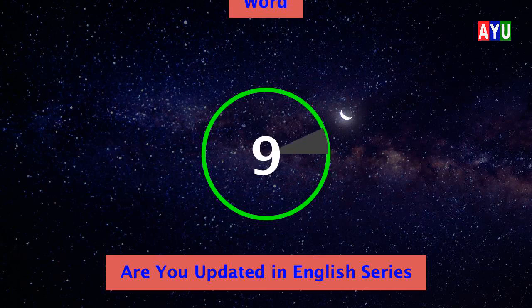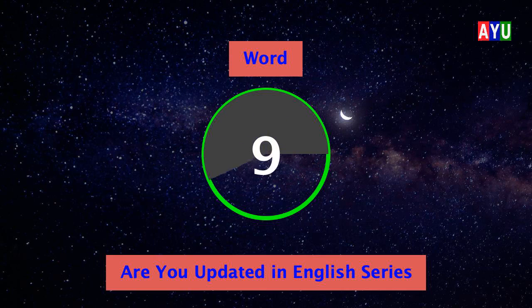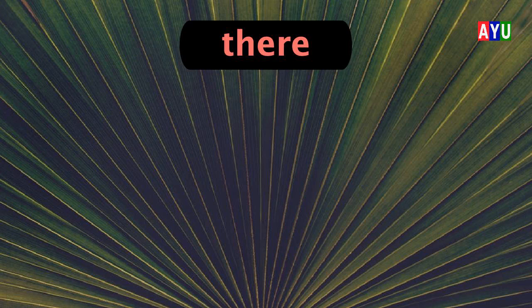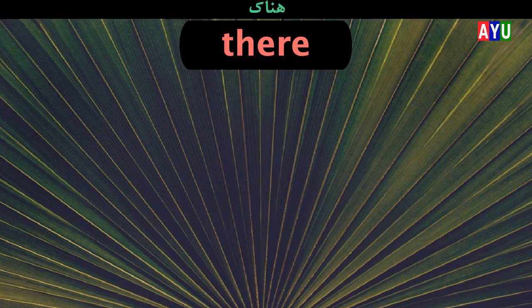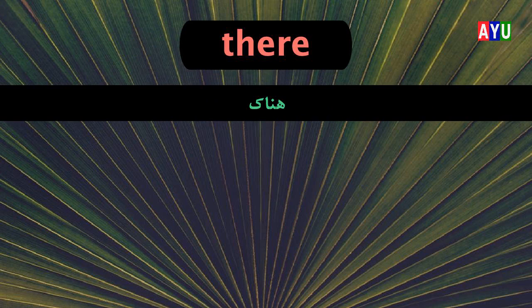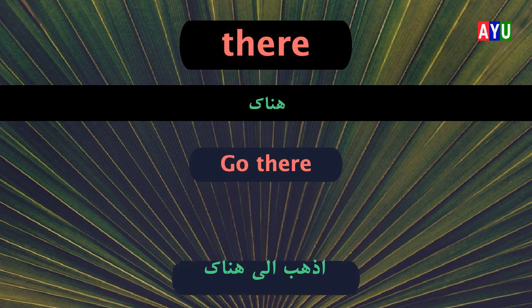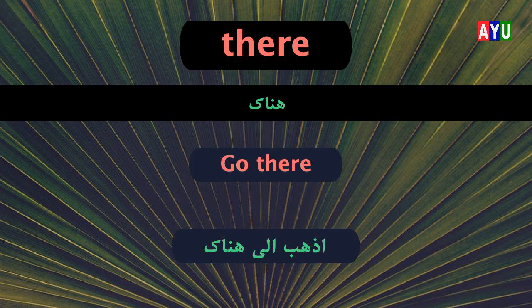Ninth word: There. There means هُنَاكَ. Let's see one example. Go there. اِذْهَبْ هُنَاكَ.